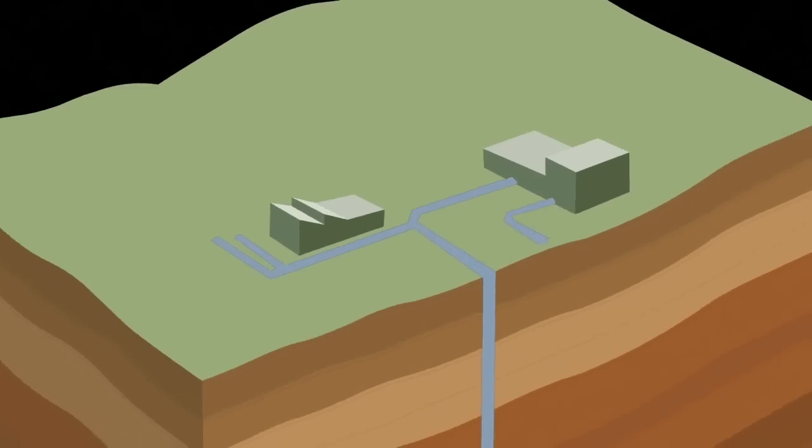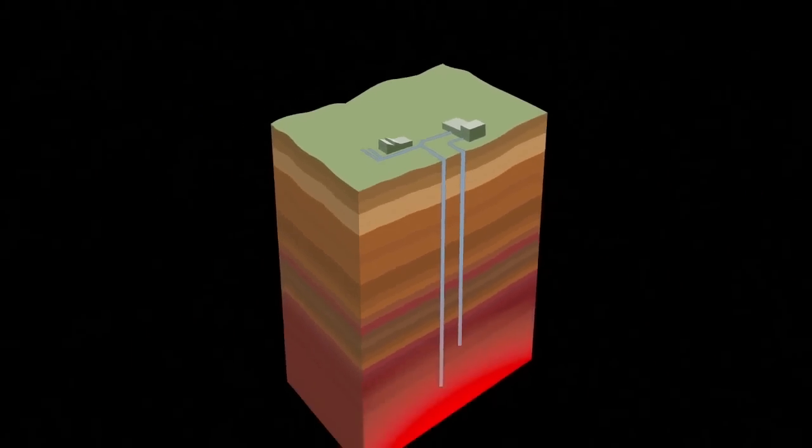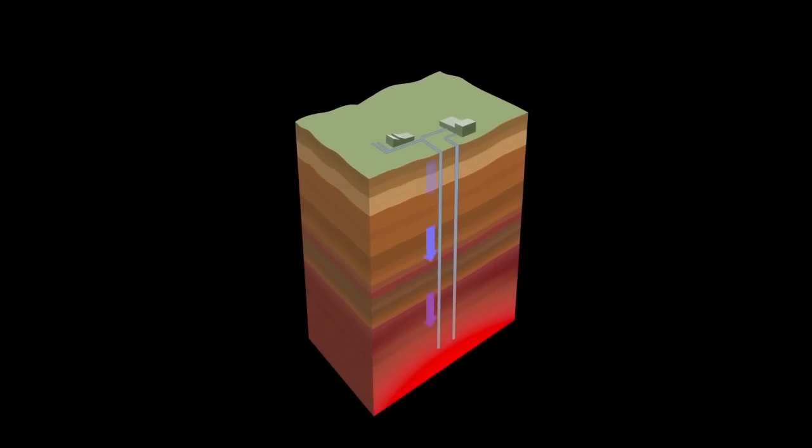In the experimental EGS system two shafts would be drilled six miles deep. Water is pumped down one shaft to be heated in fissures then rise up the other generating power.